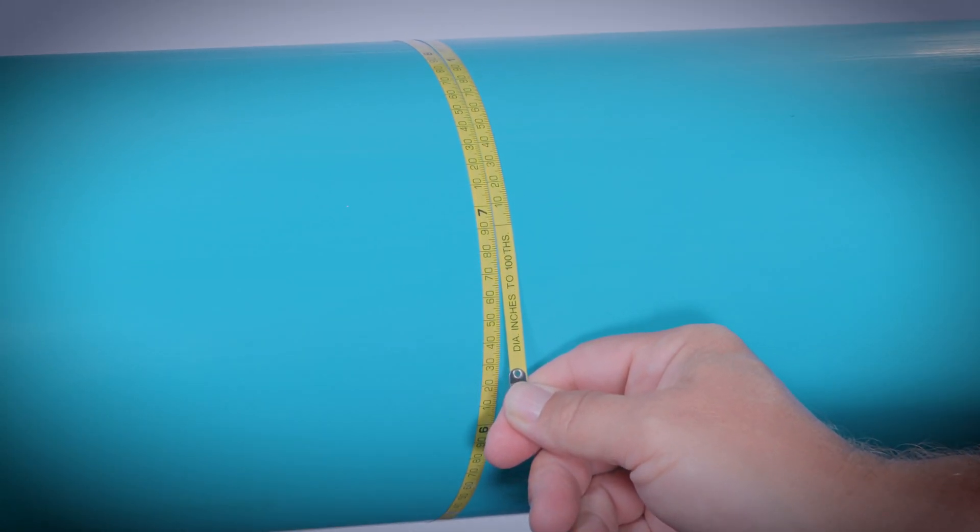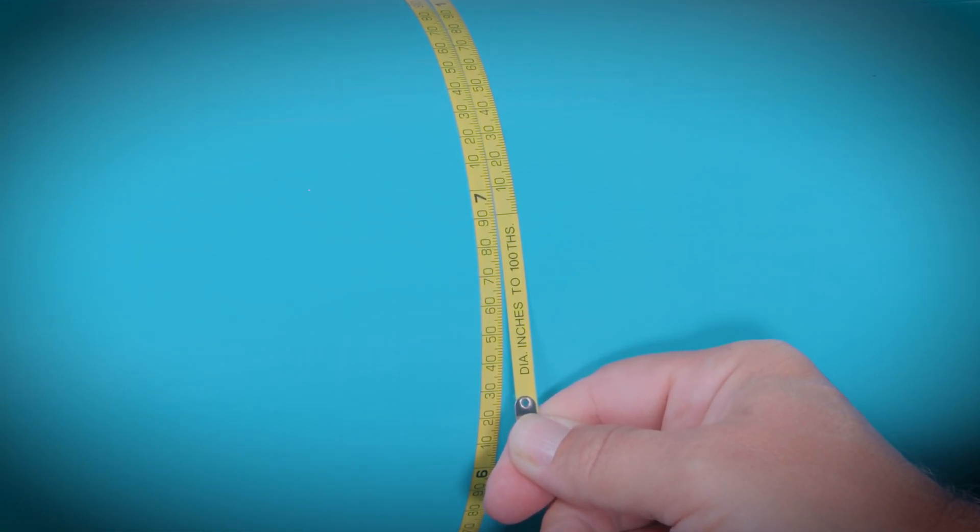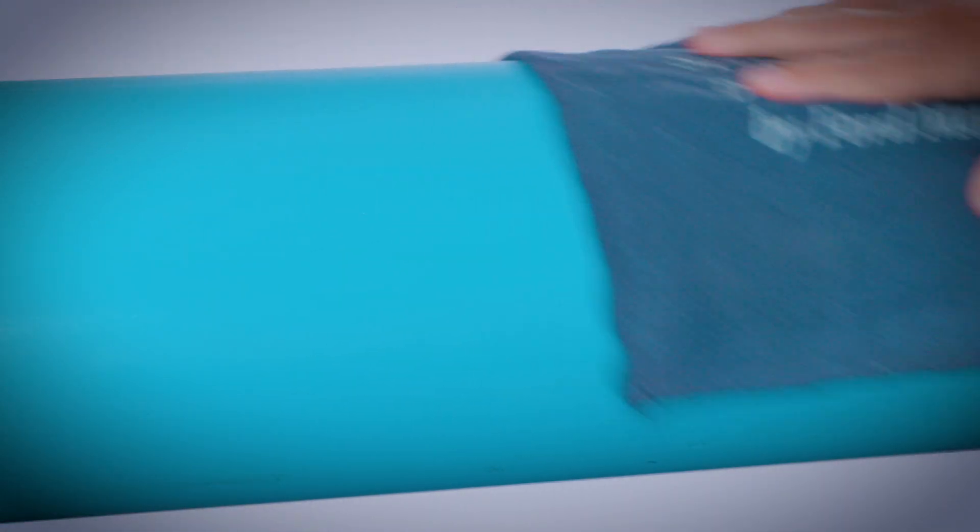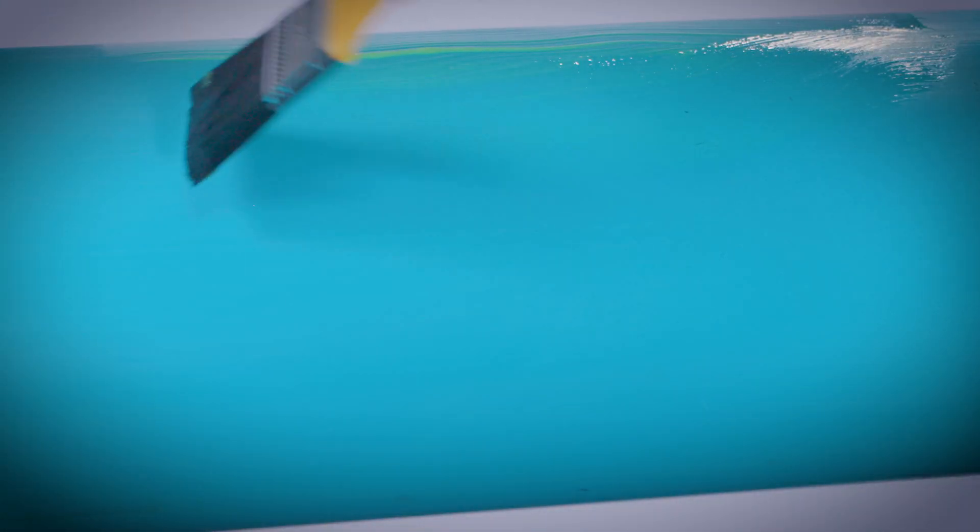Measure the pipe diameter to ensure the correct size saddle is used. Clean and lubricate the pipe under and beyond the gasket contact area with a thin coating of pipe joint lubricant.